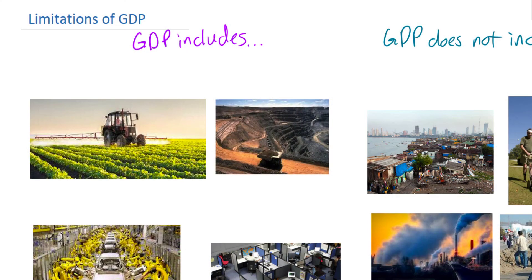In this video we're going to talk about the limitations of GDP. You've already learned what GDP is — it's a measure of the value of the output of goods and services in a nation in a year. We tend to use GDP to describe how well or how badly an economy is doing and how rich or how poor the people of a country are. However, there are some things that GDP just does not take into account, and that's what we're going to focus on in this video.